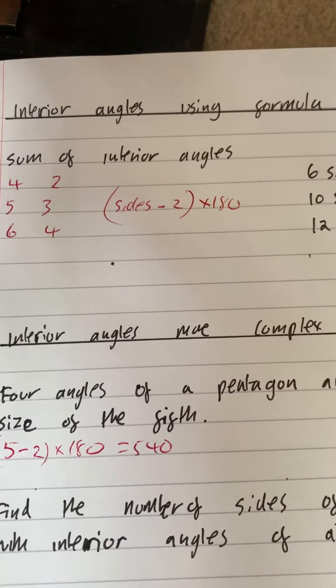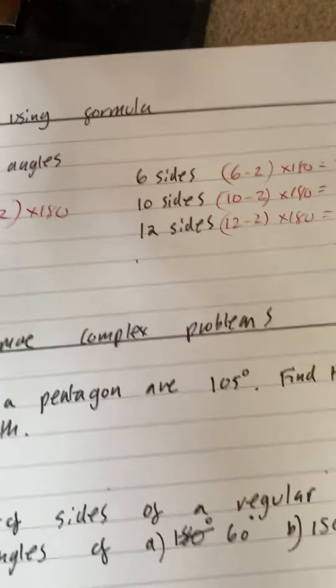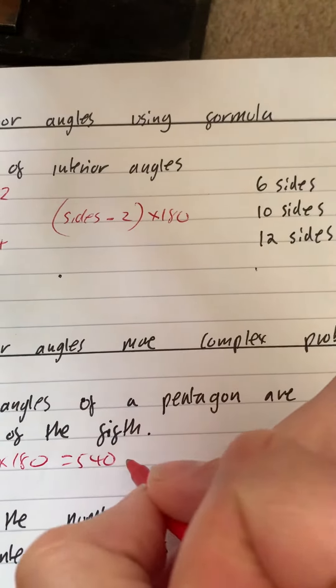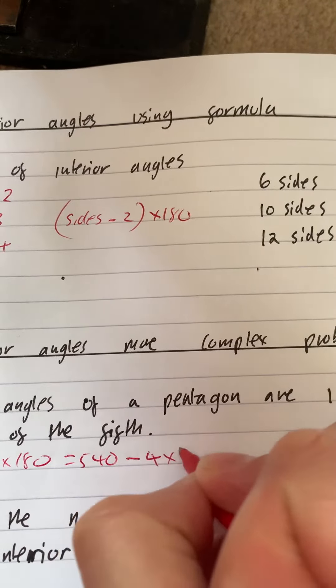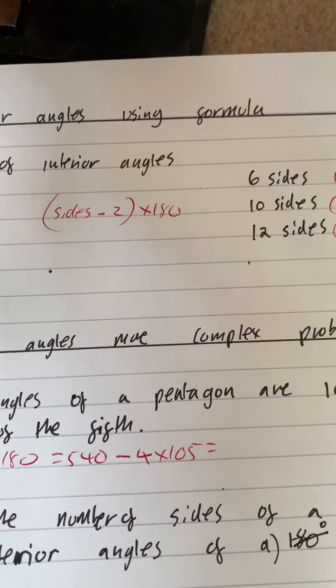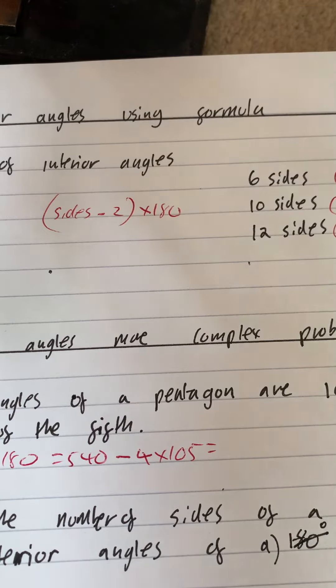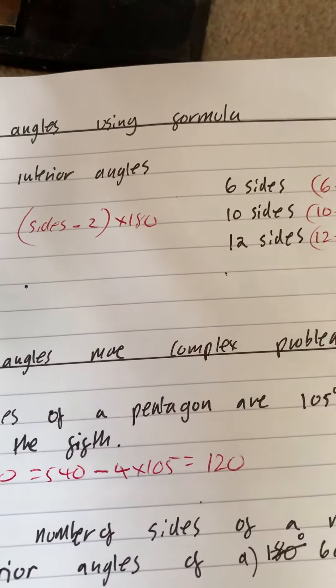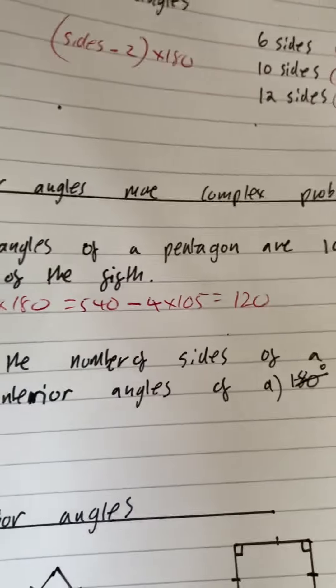Now, it says four of them of the pentagon are 105, so that means each one of them is 105, so four times 105, and that will tell us what the remaining bit is. 540 take away four times 105, and that gives us 120 for the last one. So, it's not a regular pentagon.